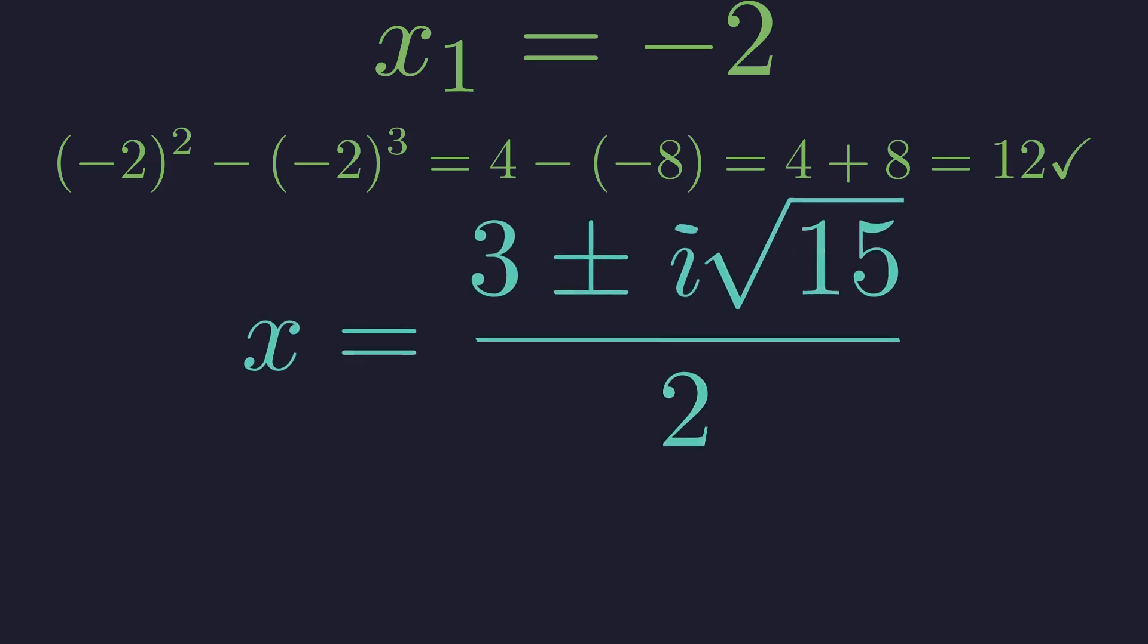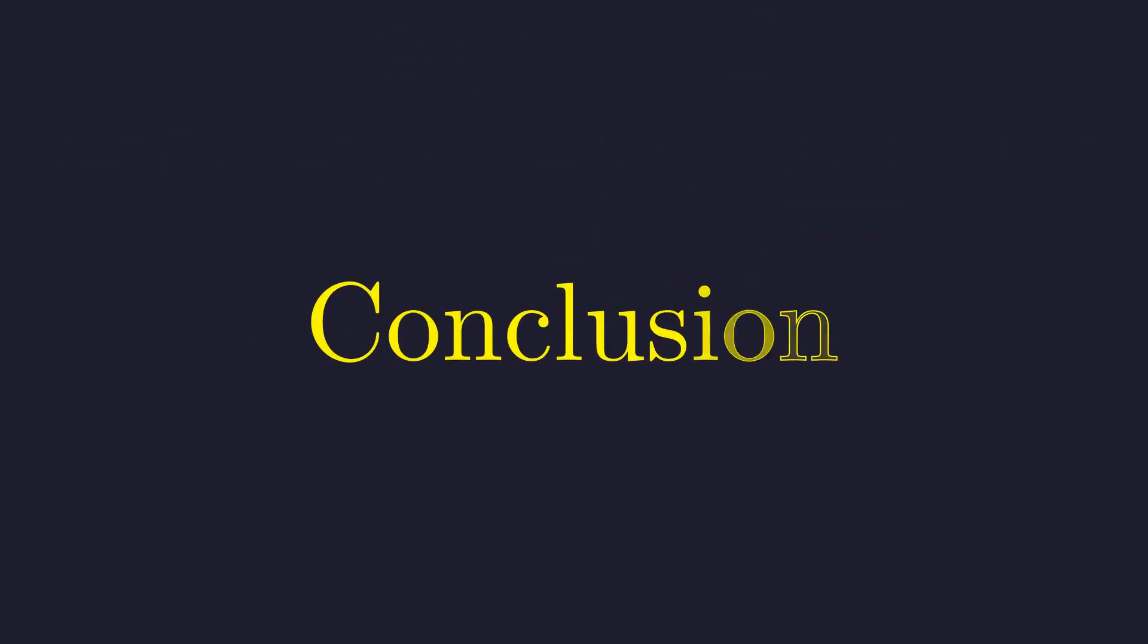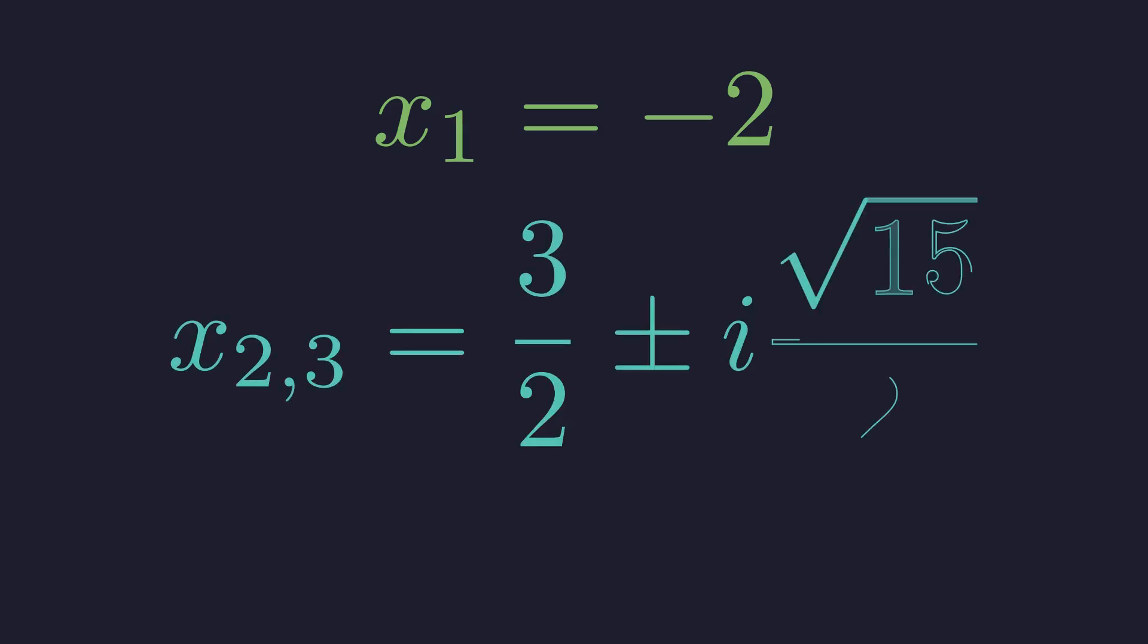We rewrite the square root of negative 15 as i times the square root of 15, where i is the imaginary unit. So we have our two complex roots. So this cubic has one real root and a pair of complex conjugates. The real solution: x equals negative 2. And the complex solutions: 3 halves plus or minus i times the square root of 15 over 2.